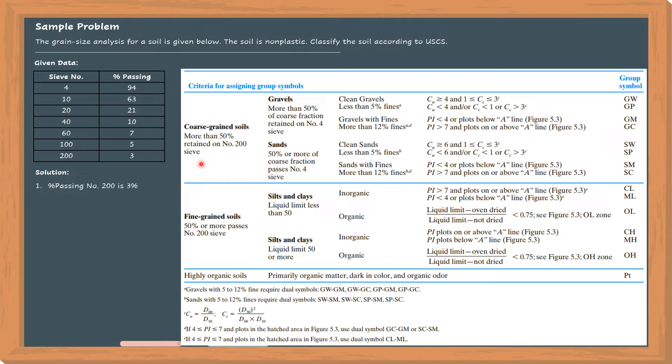From the leftmost portion of the table, we start by classifying the percent passing in number 200. As shown in the given data, percent passing number 200 is 3% only. Therefore, only a small amount passed through number 200, so that means the soil is considered as coarse grained material.